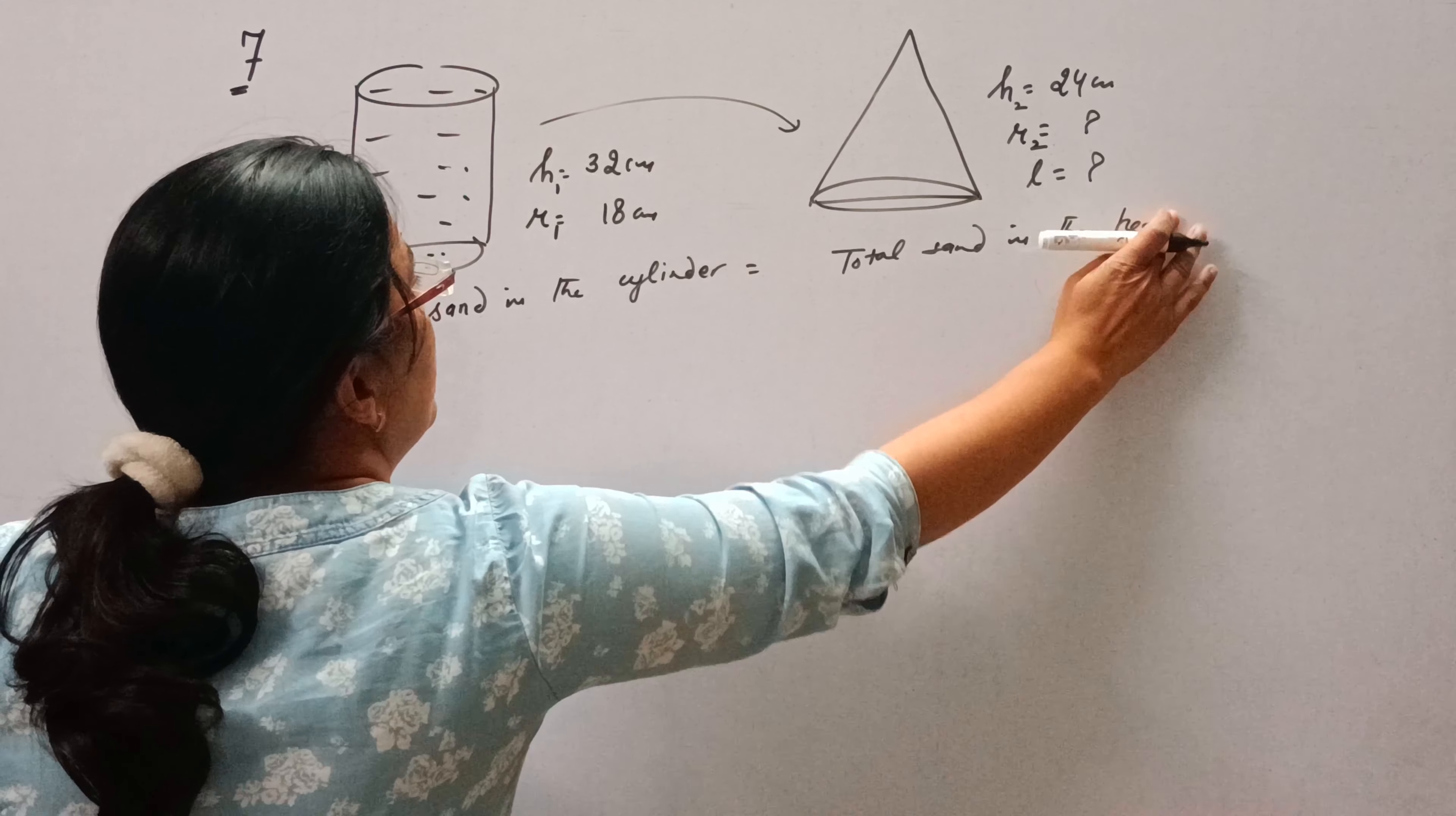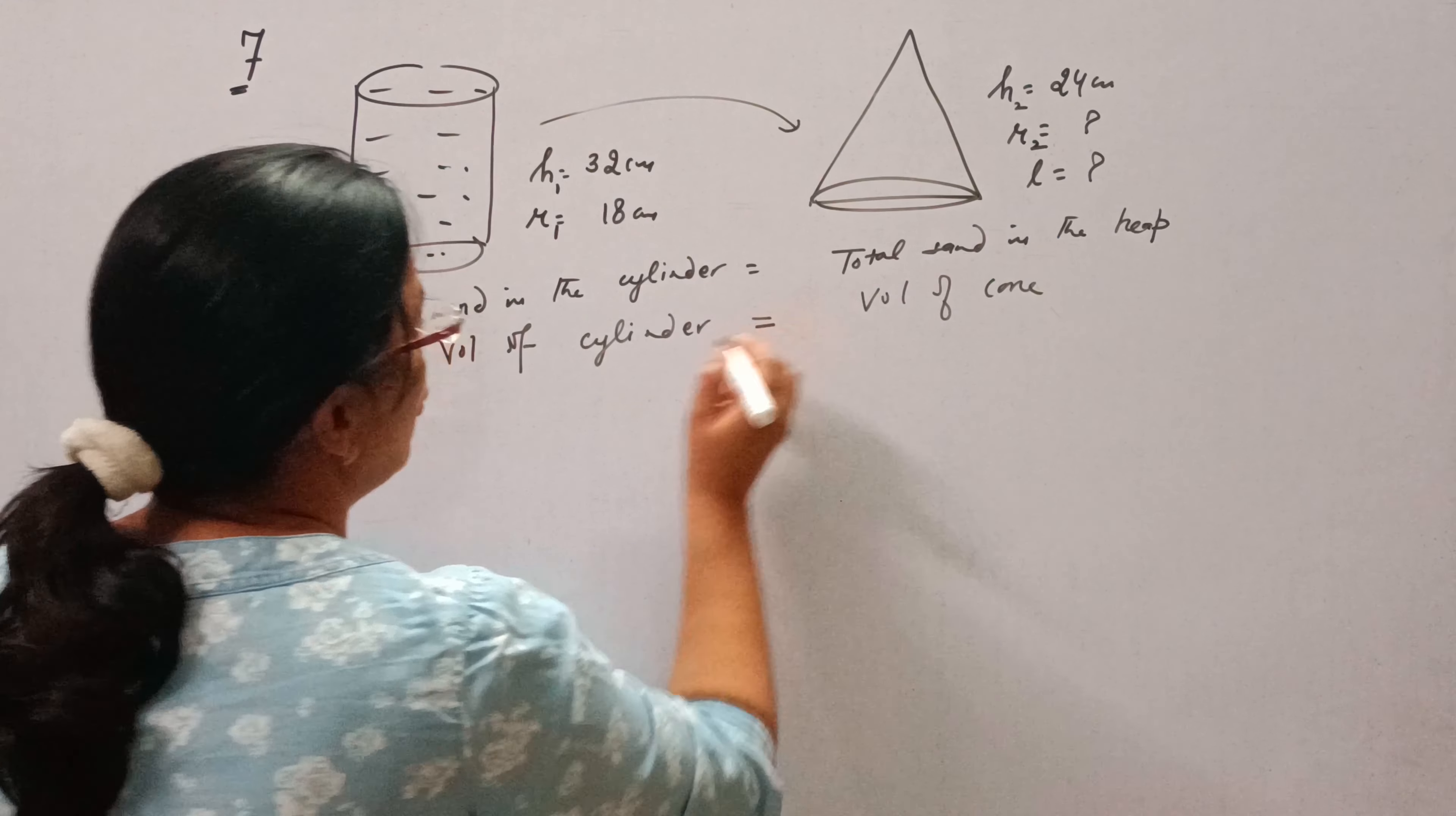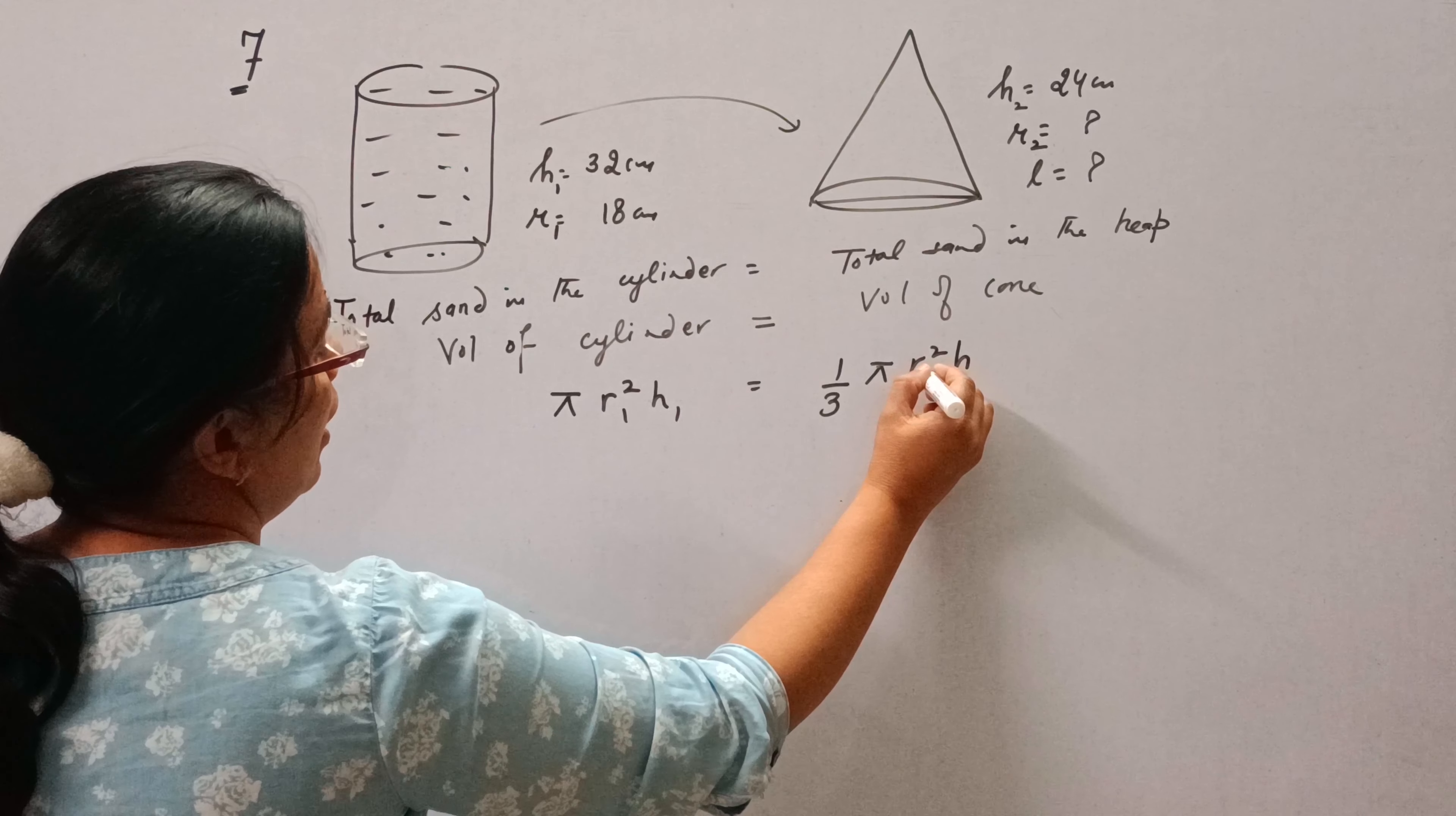So how much sand is there in the cylinder will be equal to volume of cylinder, and this will be equal to volume of cone because heap is in the form of a cone. Volume of cylinder is pi R square H, R1 H1, and volume of cone is 1 upon 3 pi R square H, R2 H2.